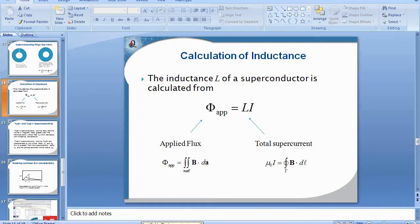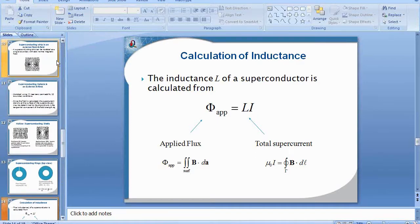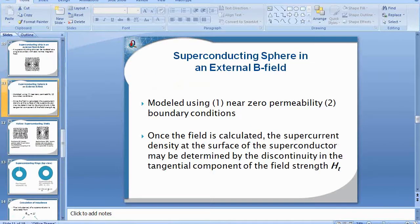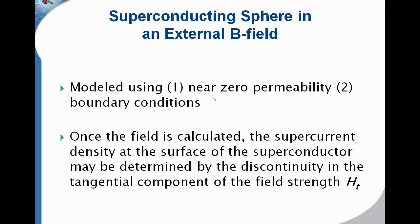I want to illustrate the couple ways that we can calculate a superconducting sphere in an external magnetic field. We can use two different approaches: one is with near-zero permeability, and the second is with boundary conditions where the normal magnetic flux density or vector potential is zero. Once the field is calculated, we can calculate the supercurrent density by determining the discontinuity in the tangential component of the field strength HT. It's sufficient just to plot the tangential field strength along the boundary of the superconductor.